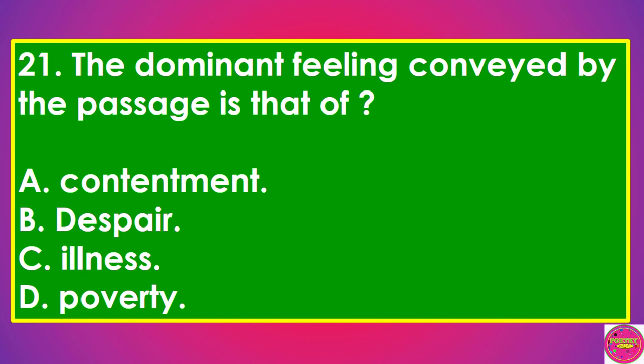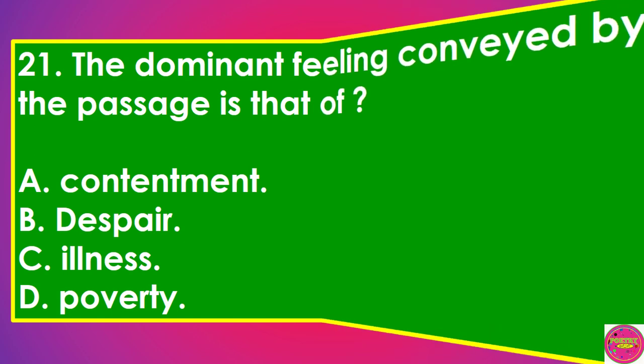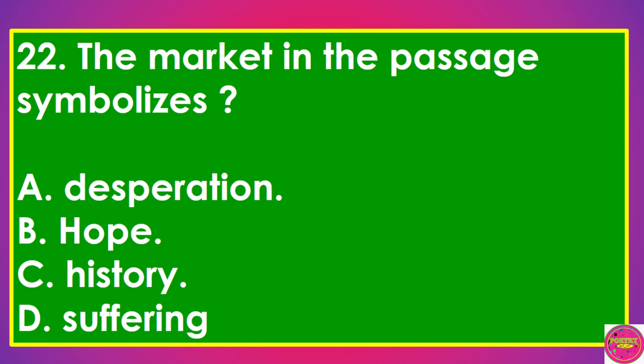Question 21: The dominant feeling conveyed by the passage is that of: A. Contentment, B. Despair, C. Illness, D. Poverty. The correct answer to this question is D. Poverty. Question 22: The correct answer to this question is B. Hope.